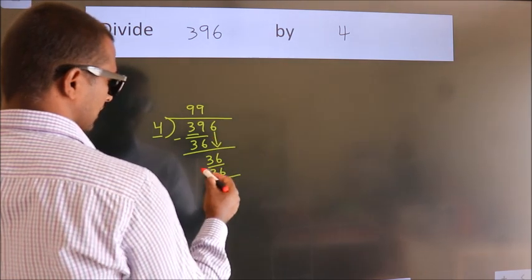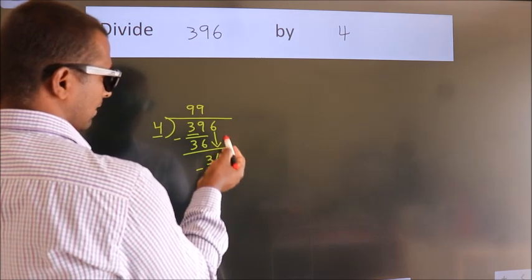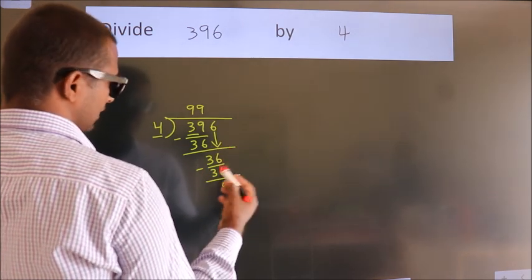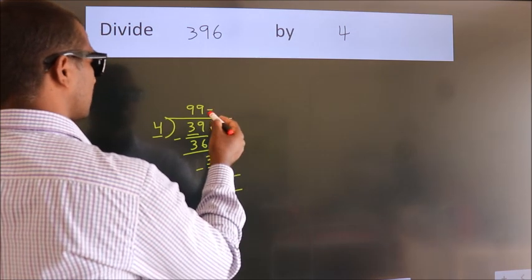Now we subtract. We get 0. After this, no more numbers to bring it down, and we got remainder 0. So this is our quotient.